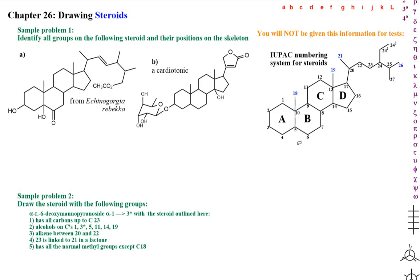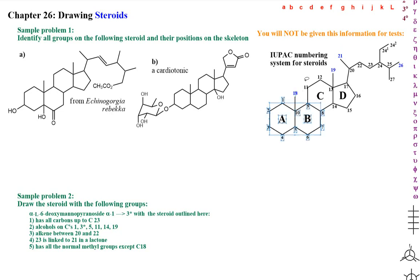Start the numbering at the bridgehead between A and B — go up to the left off the bridgehead: 1, 2, 3, 4, 5. Continue the loop around the outside: 6, 7, 8, 9, 10. Then jump up to the next ring: 11, 12, 13.